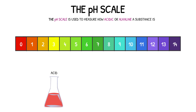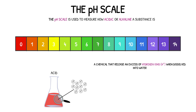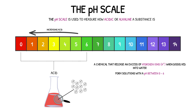An acid is any chemical that releases an excess of hydrogen ions when it dissolves into water. Acids form solutions with a pH between 0 and 6, where the strength of the acid increases as the pH value decreases. The strength of an acid is determined by the number of hydrogen ions it releases — as the number of hydrogen ions increases, the strength of the acid increases too.